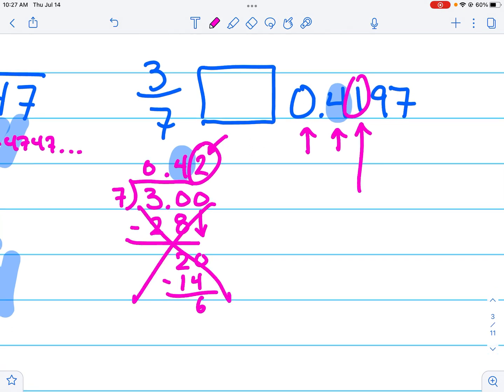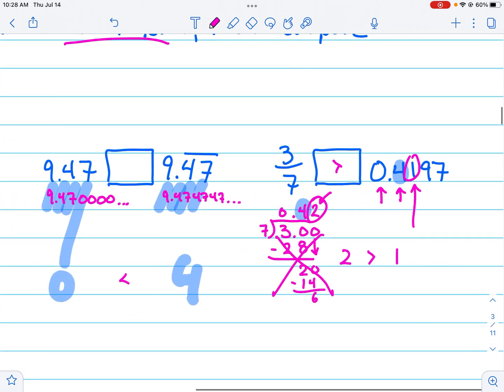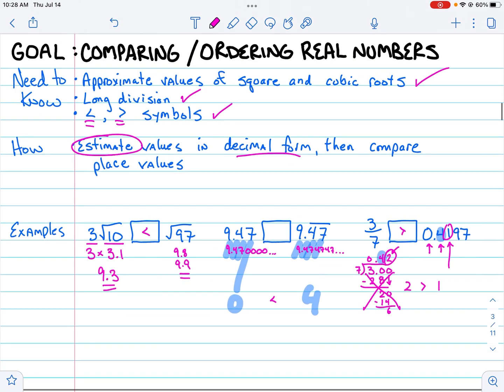...not need to finish this. We've done all we need to because 2 and 1 compare this way: 2 is greater than 1. So 3/7 is greater than 0.4197. We don't even need to test the 9 and the 7 because we've already figured it out. And that is the easiest way to compare and order real numbers.